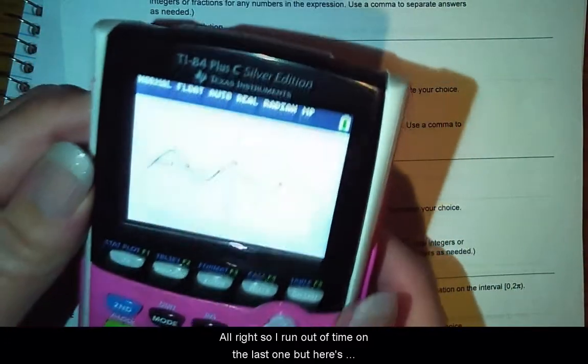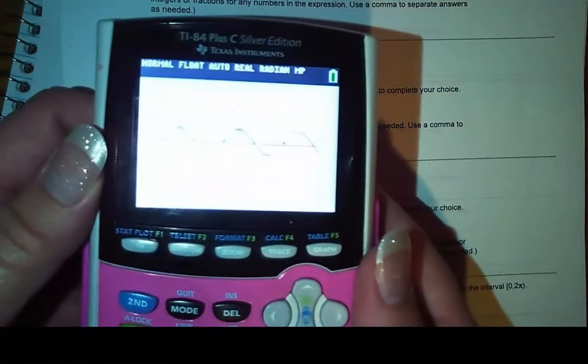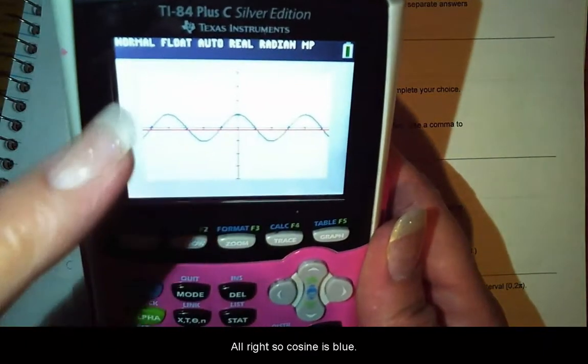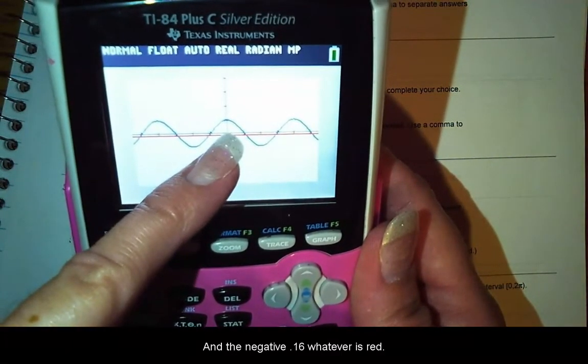All right, so I ran out of time on the last one, but here's what we're trying to do. We are trying to... I wish I could make you see this better. All right, so cosine is blue, and the negative 0.16, whatever, is red.